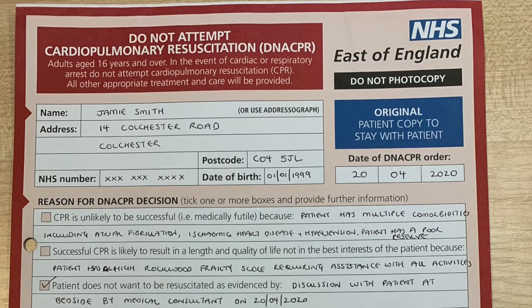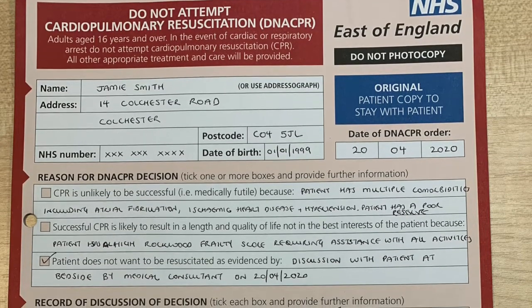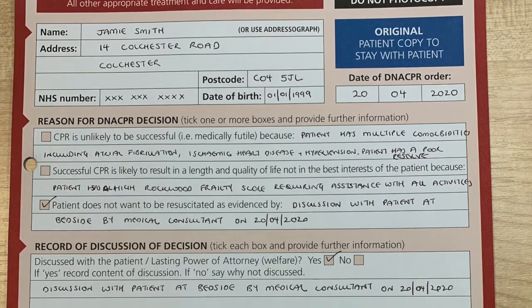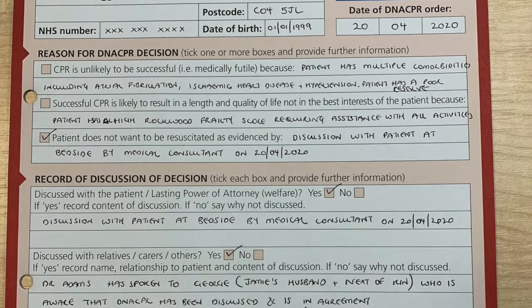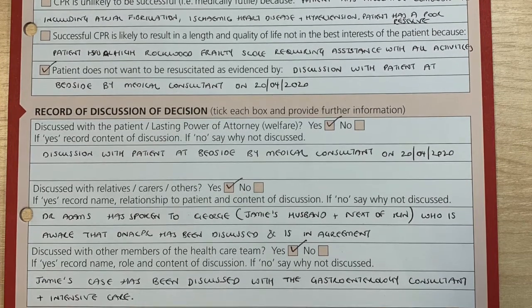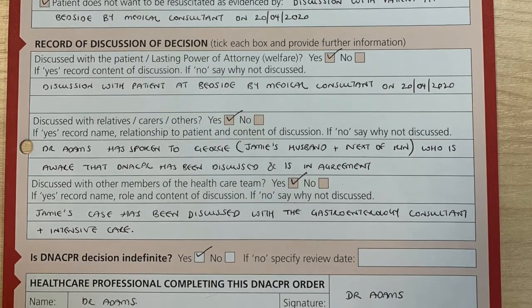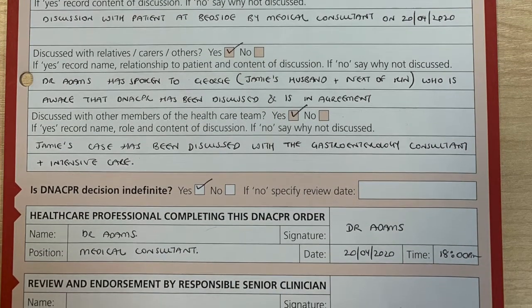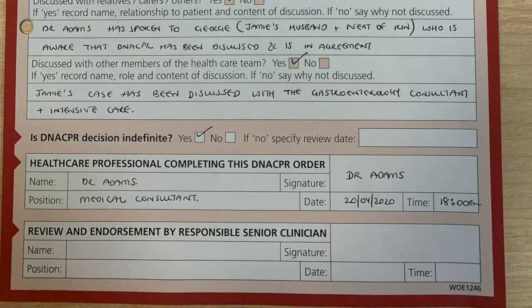The date of the DNACPR order must also be completed. Each individual section must be completed and appropriate reasons need to be given as to why we are not going to attempt to resuscitate this patient. Please also document who the do not attempt to resuscitate discussion has been discussed with — whether it be the patient, relatives, family members, next of kin, or other clinicians. A conversation must also be documented in the medical notes.